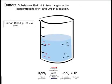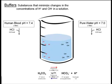As an example of what a buffer does, we can use human blood, which has a buffer, and pure water that doesn't have a buffer. We'll take one liter of each of these substances and add 0.01 moles of hydrochloric acid.